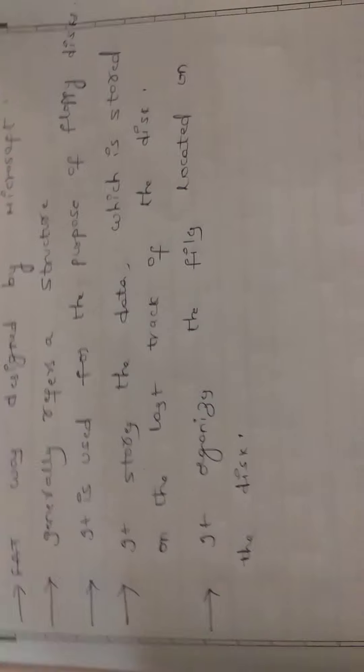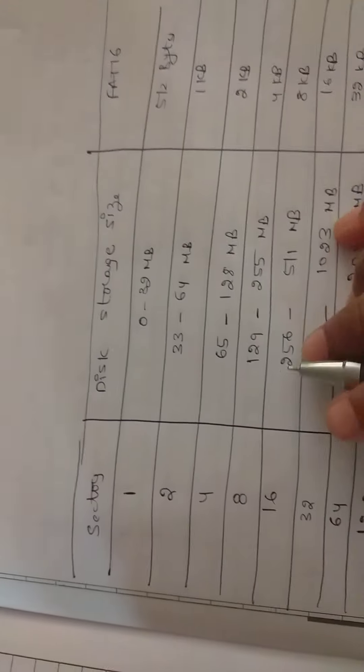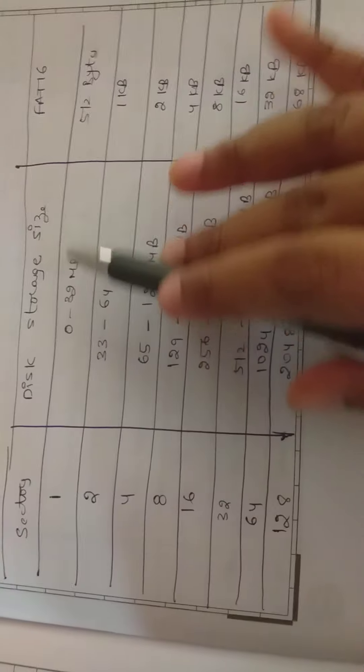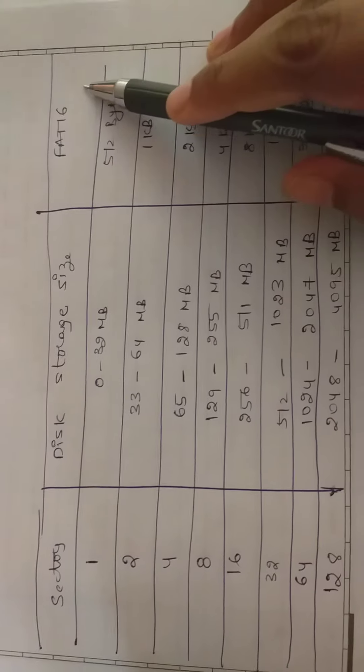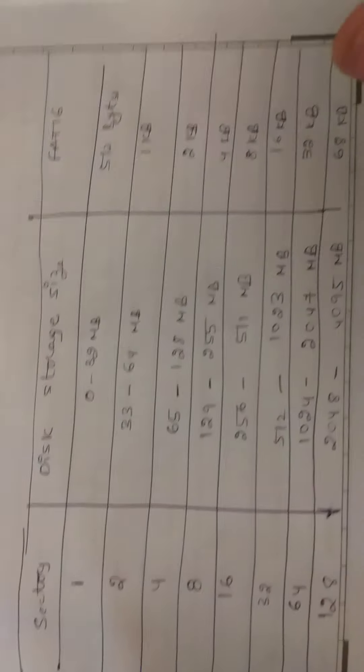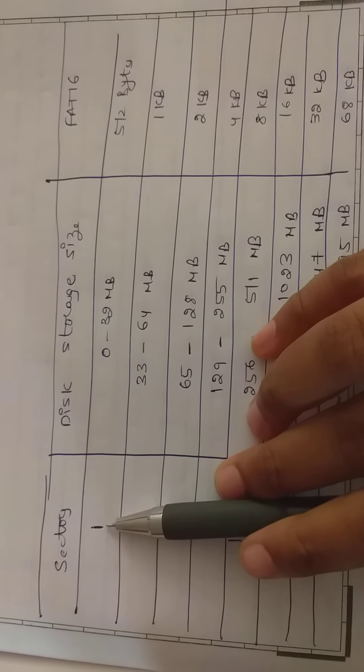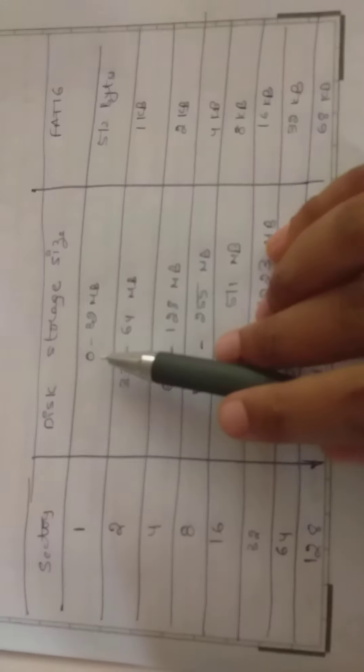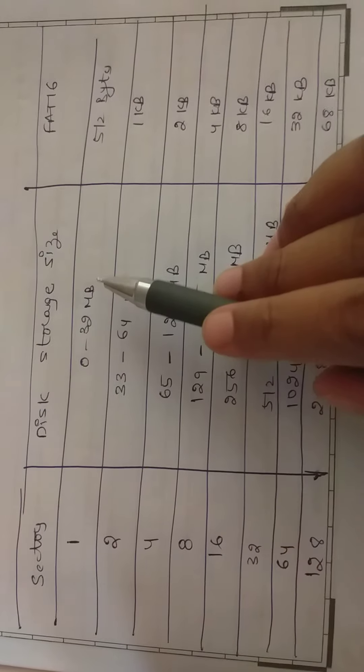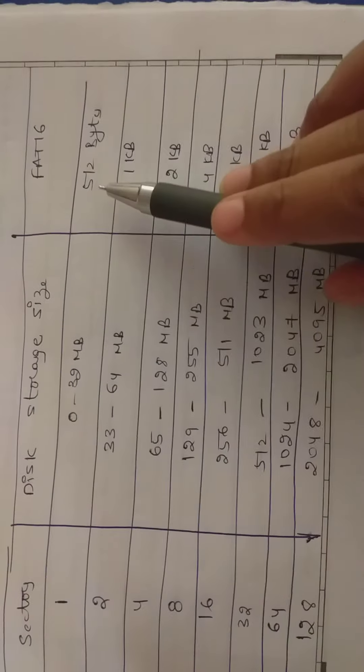We have a FAT table with sectors, disk storage size, and FAT 16. We have sector 1, its disk storage size is 0 to 32 MB, 512 bytes.